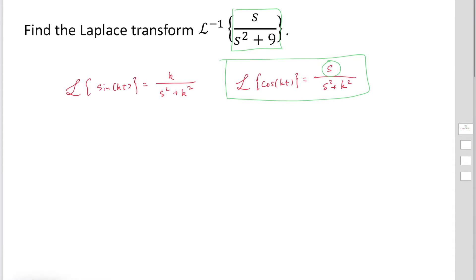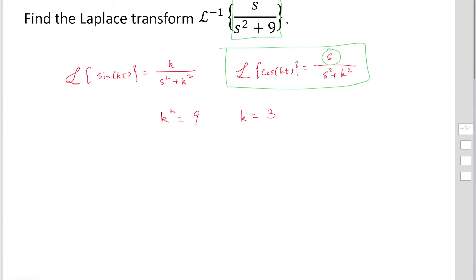Then you can easily find that k squared corresponds to 9. So k is actually 3. So we could find the Laplace transform of cosine 3t is equal to S over S squared plus 9.